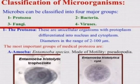Classification of Microorganism: Microorganisms are broadly classified into algae, fungi, protozoa, bacteria and viruses. This classification is based on the shape and life processes.